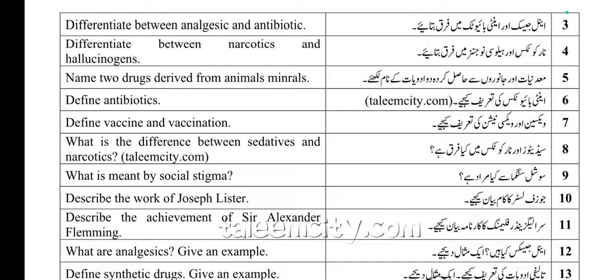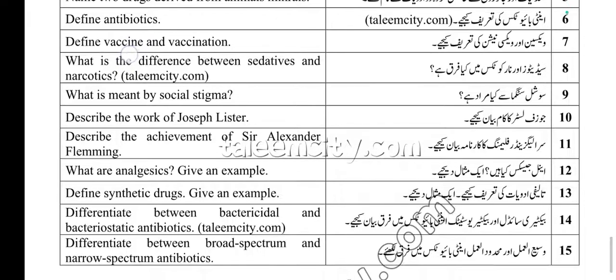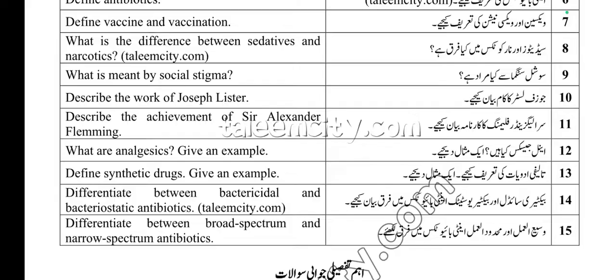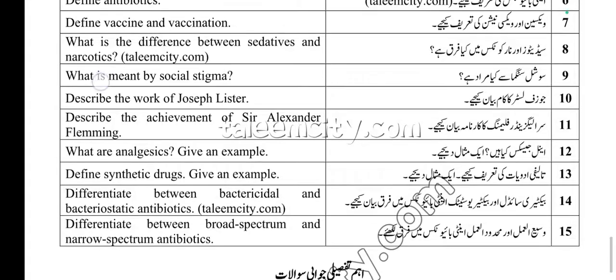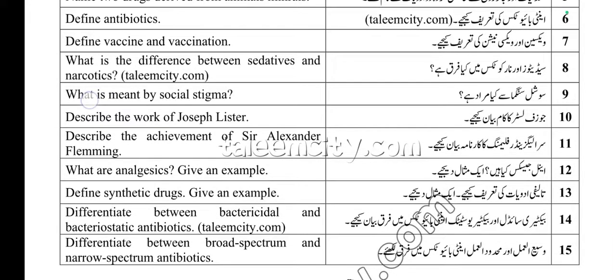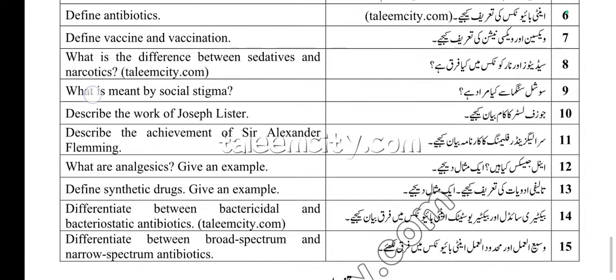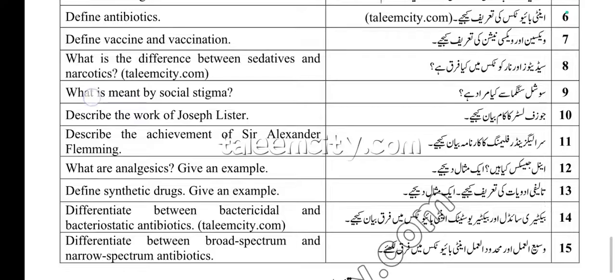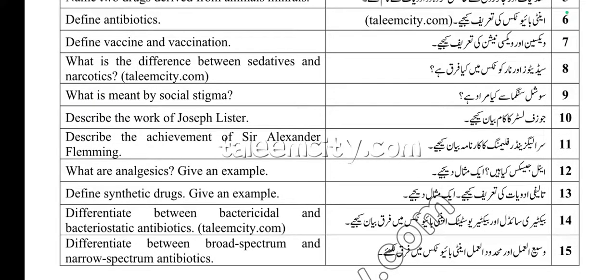You should know that this chapter is only 5 to 6 pages and is very important. Sir Alexander Fleming — any question in a scientist's name will be very important. Bactericidal and bacteriostatic antibiotics — important short question on the difference. Broad spectrum and narrow spectrum antibiotics — this is also very important.